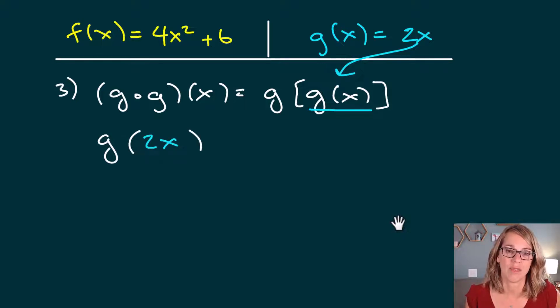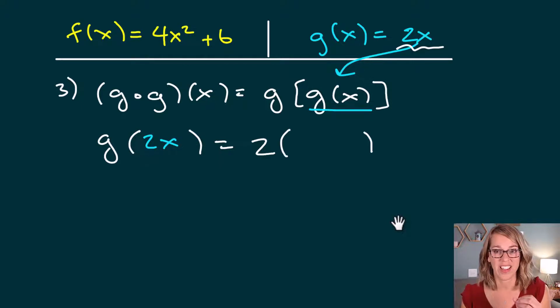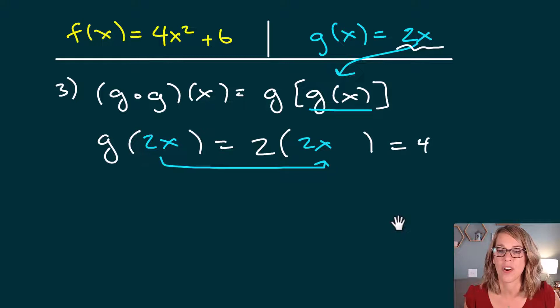So what does g do? g takes whatever we give it, and it multiplies it by 2. So this is going to be 2 times my input. That's what g does. But my input is 2x. So it's going to be 2 times 2x, and I end up with 4x. Now think about this answer. It makes so much sense.